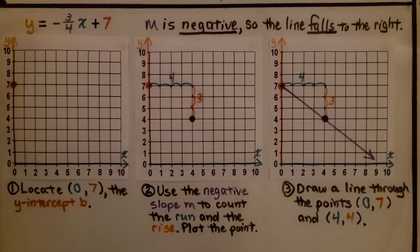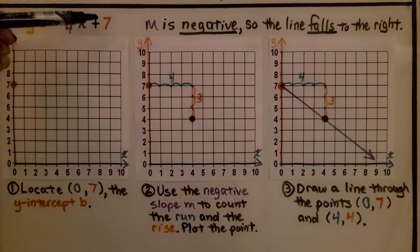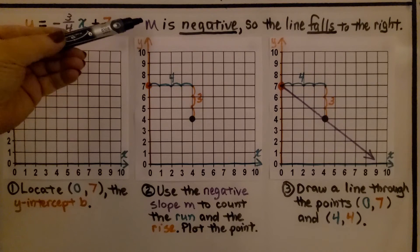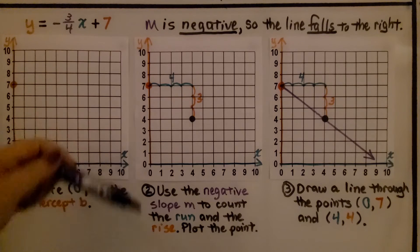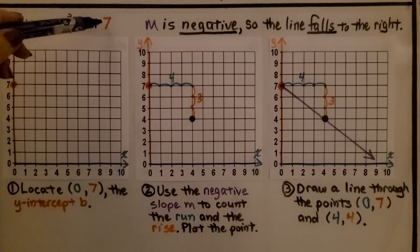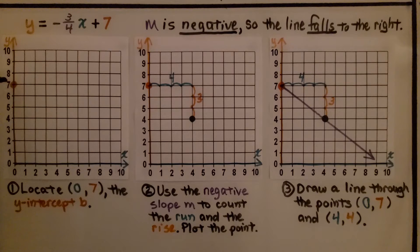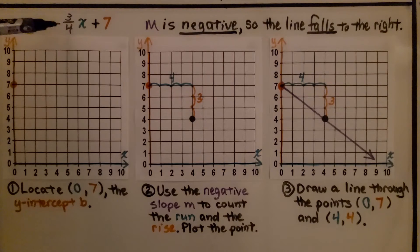Now in this slope-intercept equation, we've got a negative slope and a positive y-intercept b. Because the slope m is negative, we know the line is going to fall to the right, so we already know the direction our line is going to go. First thing we do is find a positive 7 on the y-axis — that's up here, 0 for x and 7 for y. We know we have a negative rise over run: negative 3 over 4.